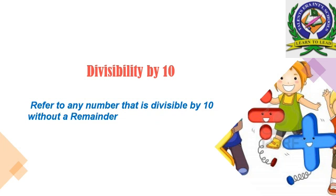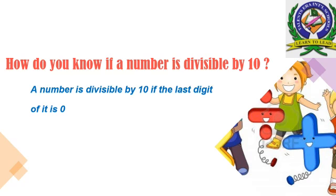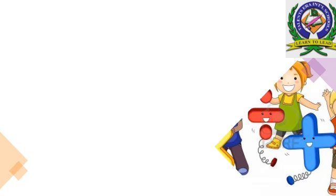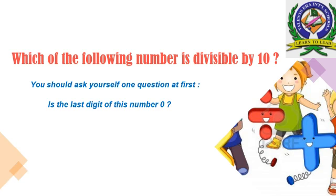Divisibility by 10 refers to any number that is divisible by 10 without remainder. How do you know if a number is divisible by 10? A number is divisible by 10 if the last digit of it is 0, and 0 only. If given a group of numbers, you should ask yourself one question in this lesson: is the last digit of this number 0? If yes, that means it's divisible by 10.